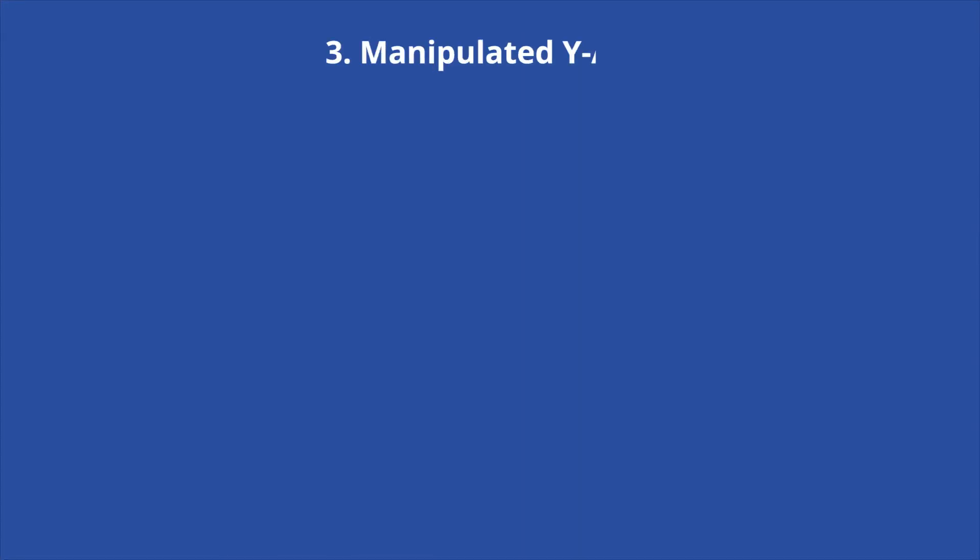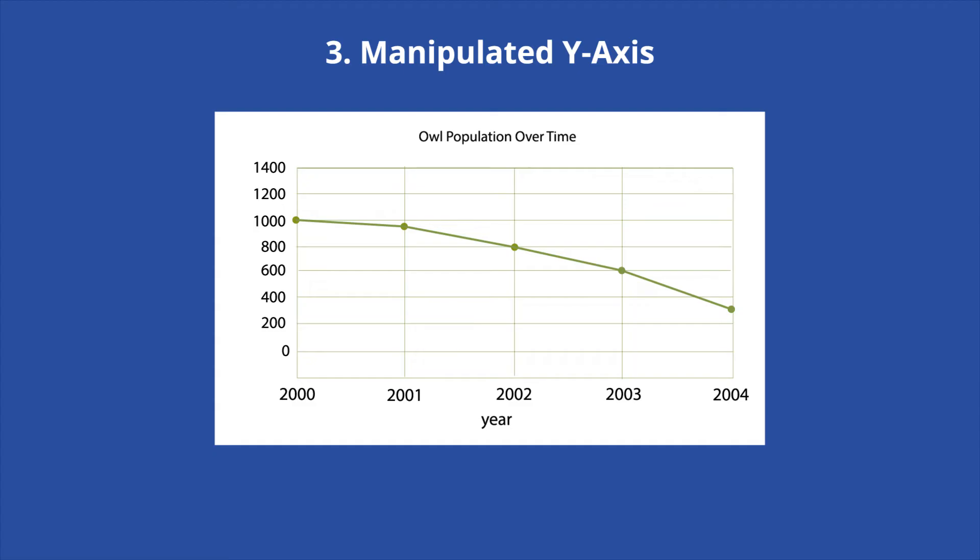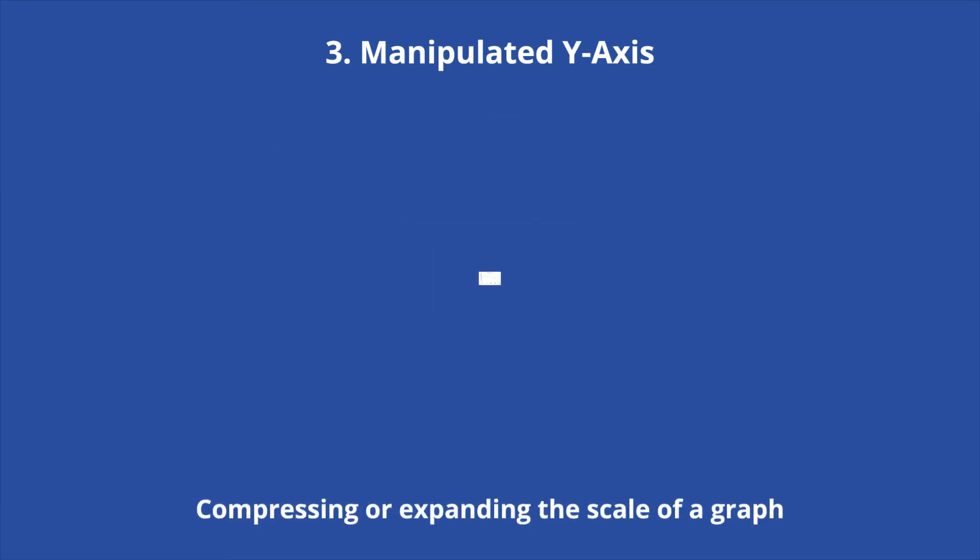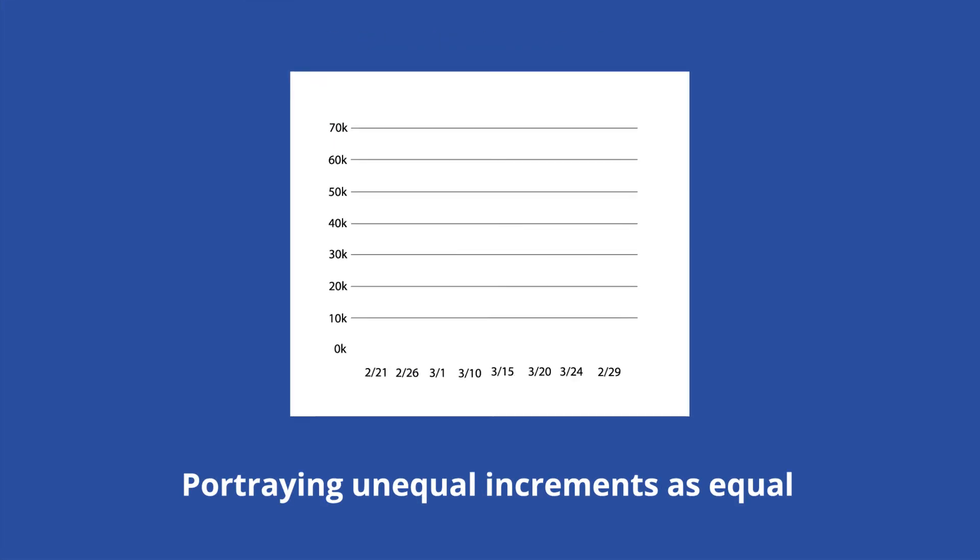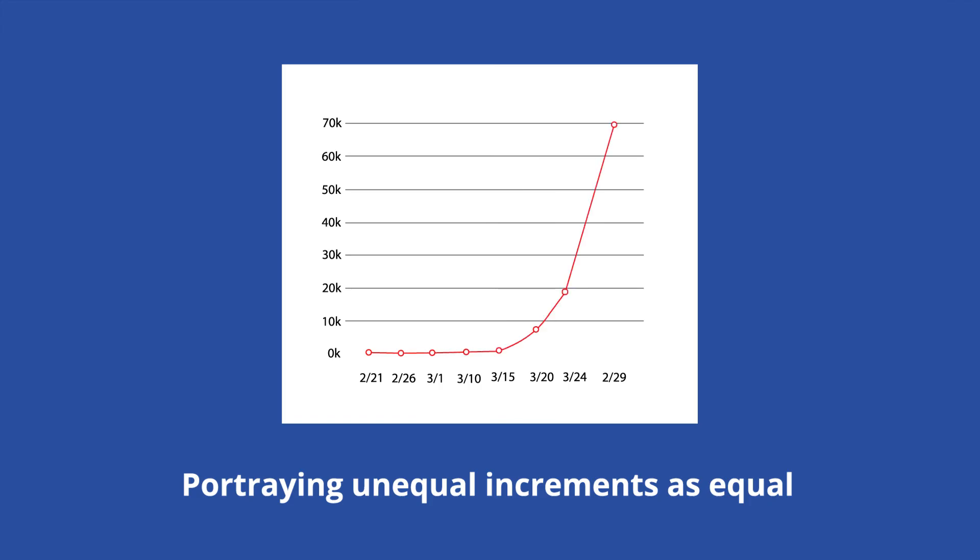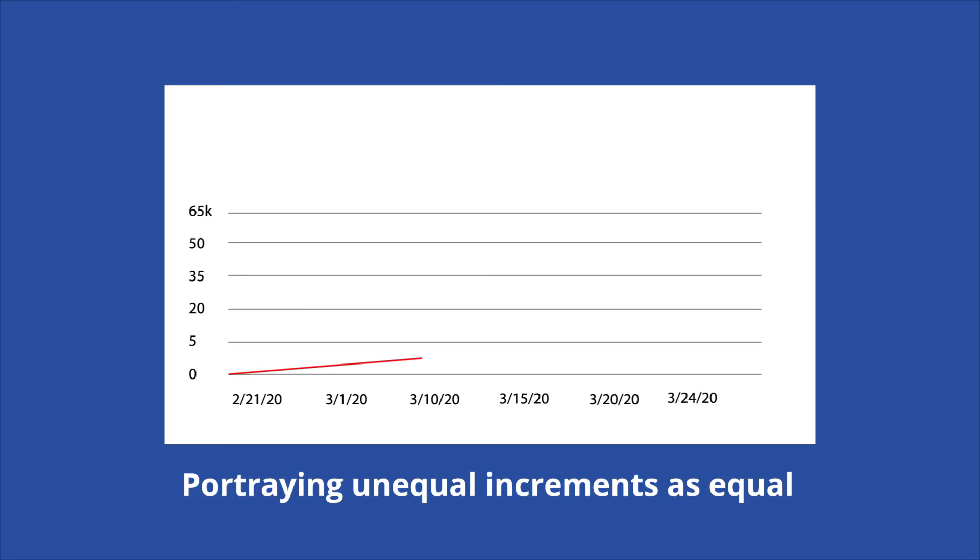Third, the y-axis has been manipulated. People can also misrepresent data by manipulating the graph's y-axis in at least two ways. The first way is compressing or expanding the scale of a graph to make changes in data look more or less significant than they really are. The second way is portraying unequal increments as equal. On a line graph, this will distort the trend line. For example, you can make exponential growth look more linear by skipping values on the y-axis without correctly spacing out the jump.